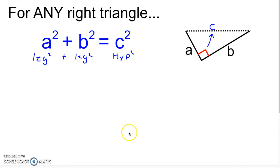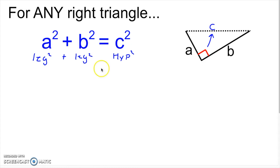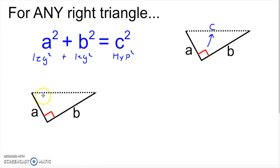But if we relax that restriction — if we say, what if instead of calling c the hypotenuse, we just let c be the largest side of a triangle? Then we can consider what happens if a squared plus b squared doesn't equal c squared. Let's imagine if this were a right triangle with leg lengths a and b — that dotted line represents the length the hypotenuse would need to be for those two legs.